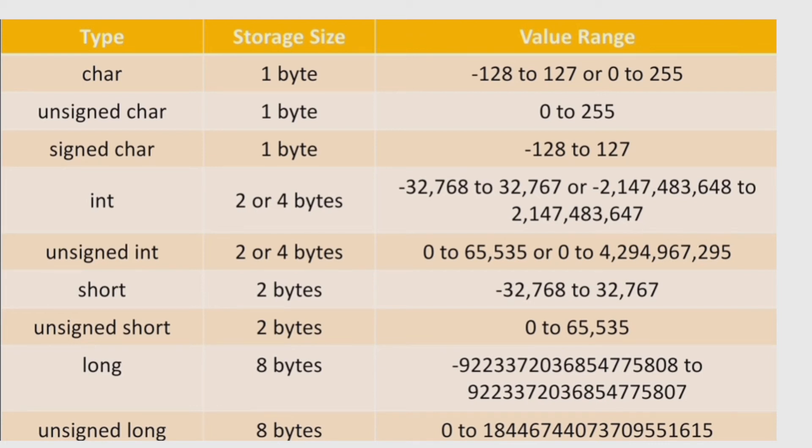You can see different types which include int, unsigned int, short, unsigned short, long, and unsigned long, which have different storage sizes of 2 bytes, 2 bytes, 2 bytes, 8 bytes, and 8 bytes respectively.